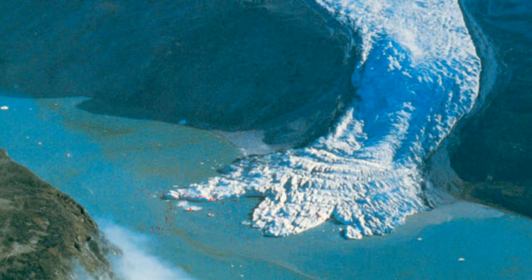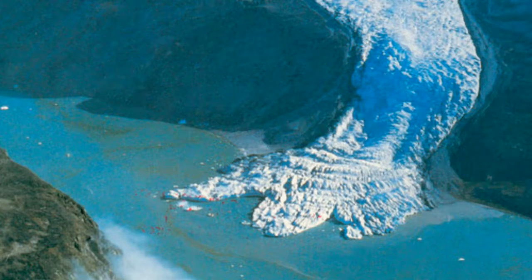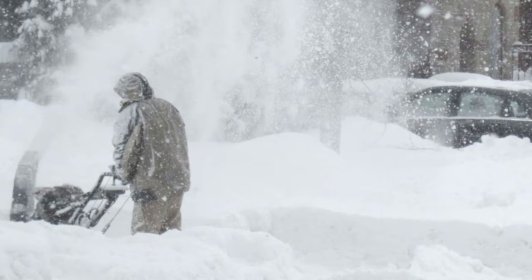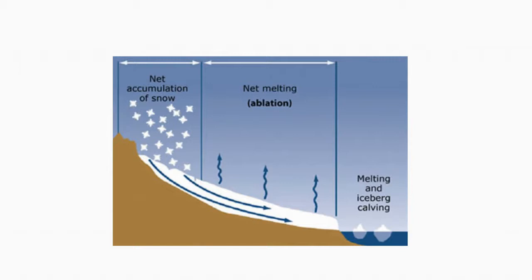Firstly, a glacier is a body of ice that moves under its own weight, from the amount of glacial ice that has piled on it over time. But how does this glacial ice even get there? You probably guessed it — glacial ice originates from snow. Simply put, glaciers form when snow accumulation exceeds the summer melt or ablation zone.